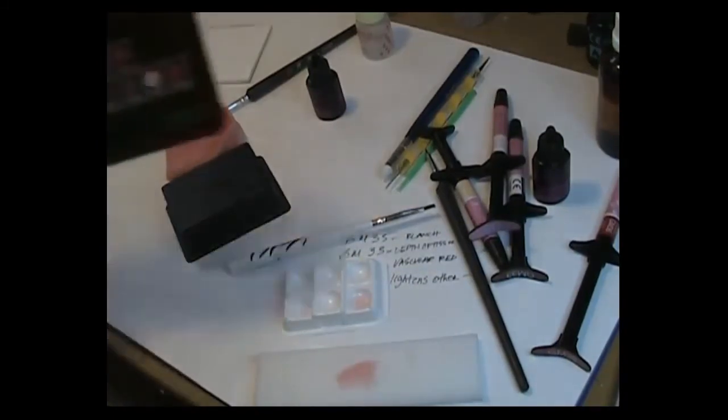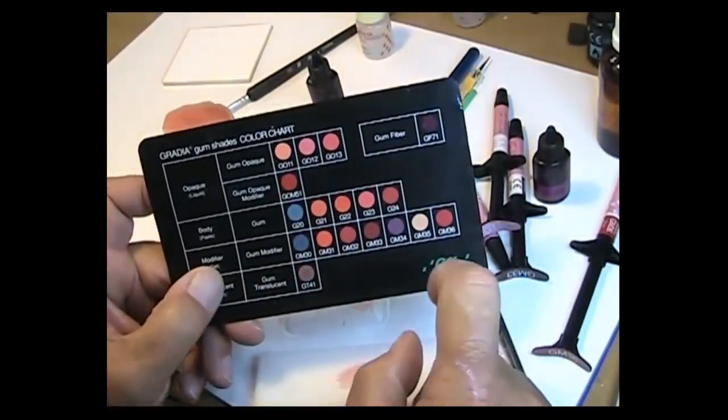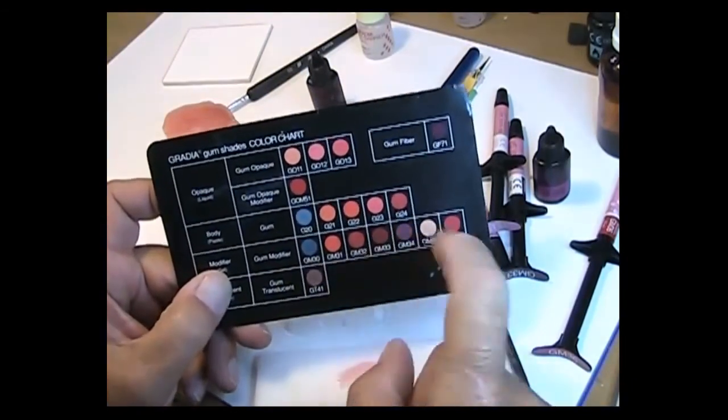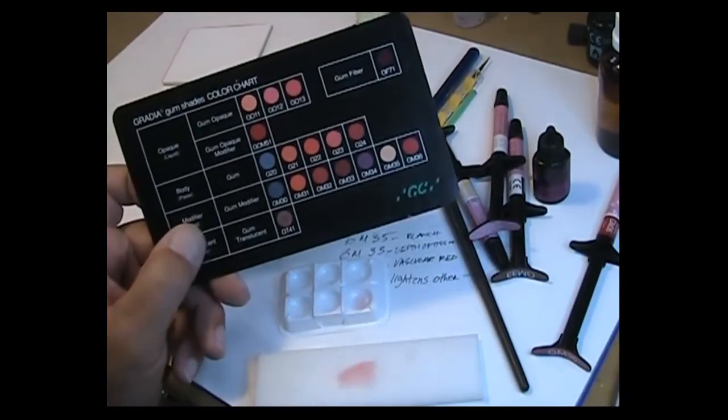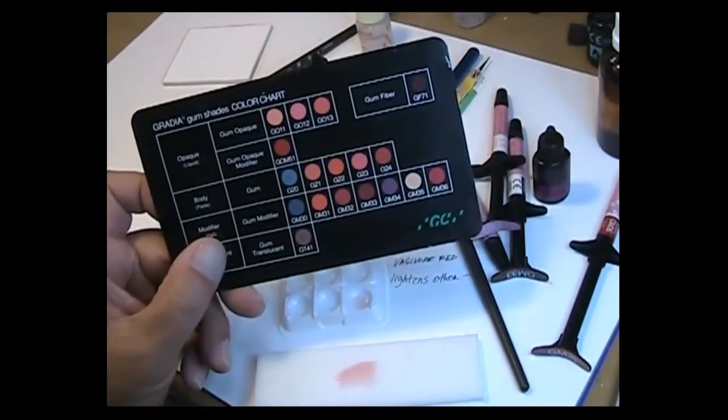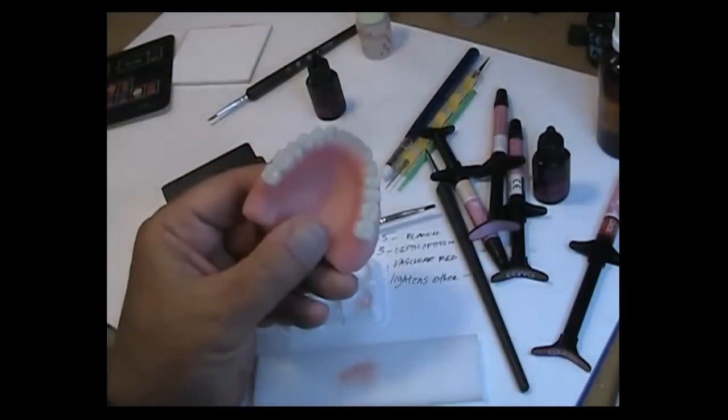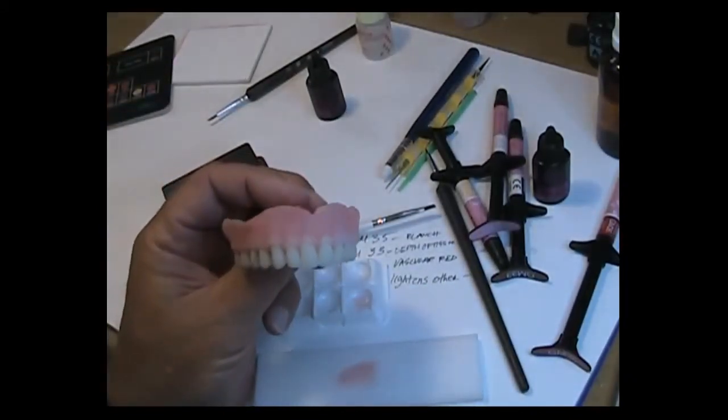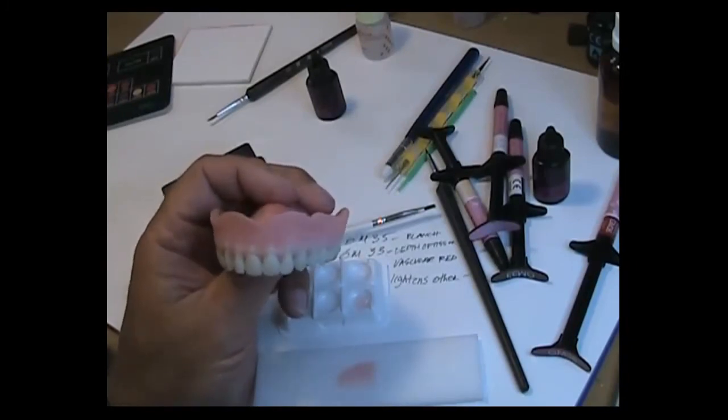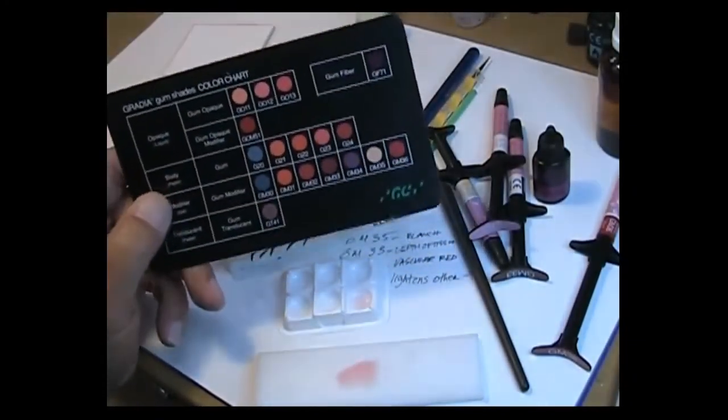As you can see on the card here there are several that I did not mention, the 34, the 32, the 31. There's several different shades of red and pink which can be added, but depending on your canvas, and your canvas of course is the base material that you're using, that will really define which products you'll be using to get the effects you're looking for.